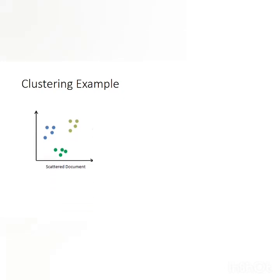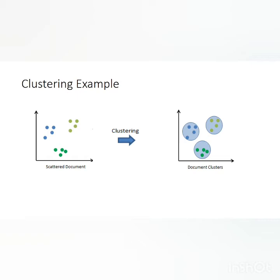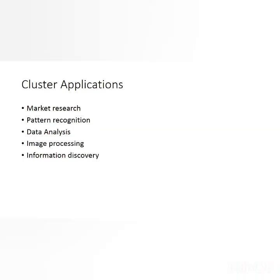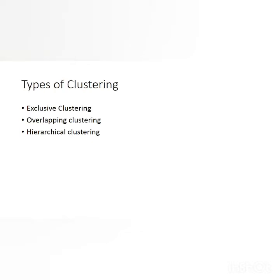Here is an example of clustering. You have a scattered dataset, and after applying the clustering algorithm you can see different sets of clusters. We have N number of data points, and after applying the clustering techniques we group these data points into different clusters. Clustering is mainly used in market research, pattern recognition, data analysis, image processing, and information discovery, among many other areas.